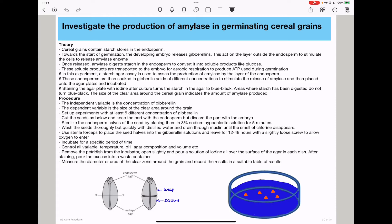Staining the agar plate with iodine after culture turns the starch blue-black. Areas where starch has been digested do not turn blue-black. The size of the clear area around the cereal grain indicates the amount of amylase produced.